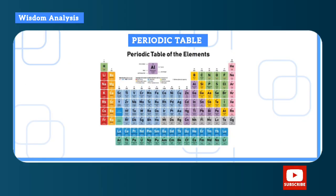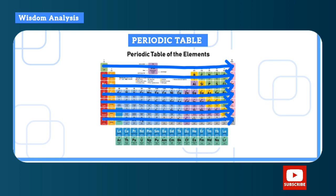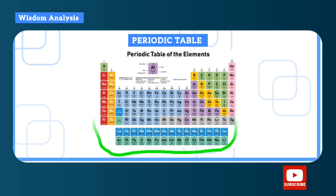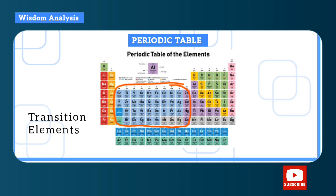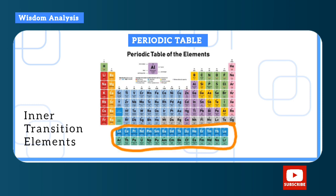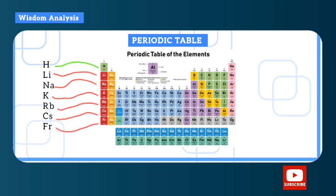This is a periodic table. The verticals are called groups, while the horizontal rows are called periods. These ones are called the transition elements, while these are called the inner transition elements, which came out from these two vacant spots.